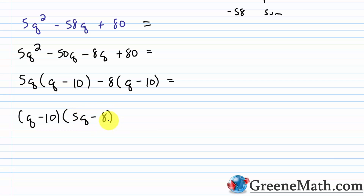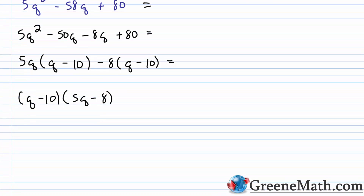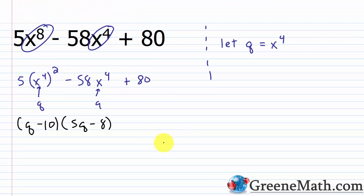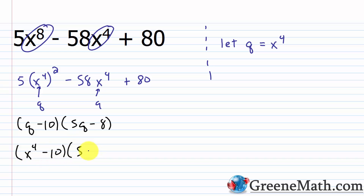Now I replace q with x to the fourth power. The final answer for this problem is (x to the fourth power minus 10) times (5 times x to the fourth power minus 8). This is the factorization.